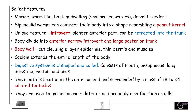So as we said, they are marine, worm-like, bottom dwellers and deposit feeders. They got the name peanut worms because in the retracted state, when their body is contracted, it resembles a peanut kernel. The anterior end is narrow with the introvert and a large posterior trunk.